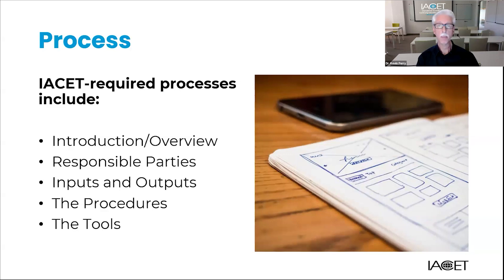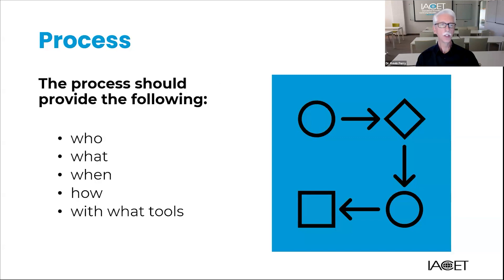When it comes to evidence, you'll need to submit completed versions of these tools. For example, if completing a checklist is a tool you use to ensure your learning environment meets requirements, then you would submit an actual completed checklist as your evidence, not the blank checklist. Every process shall explain the who, what, when, how, and with what tools. Commissioners will examine each process and verify that all of these components are included. If one is missing — for example, the when — commissioners will likely return the application and ask you to resubmit a revised process. Make sure your process is complete so that no matter who conducts the process, the same outcome would result.